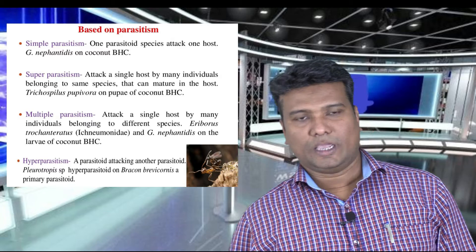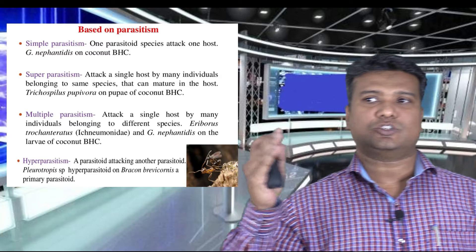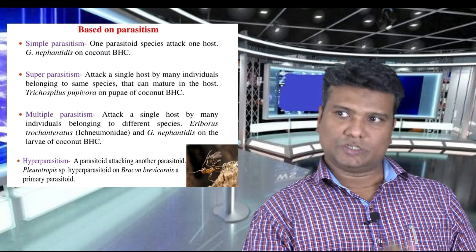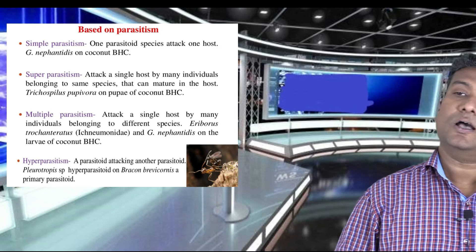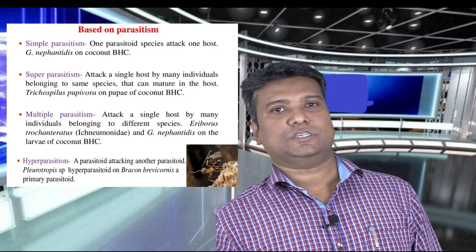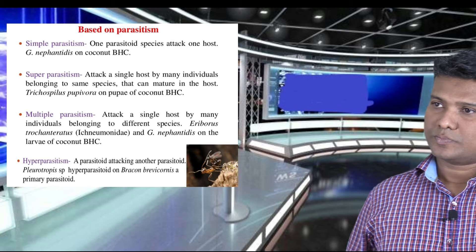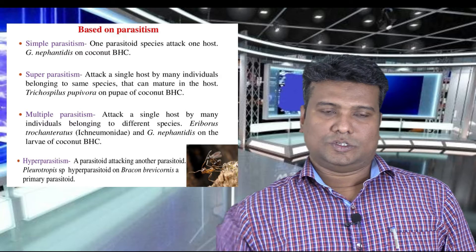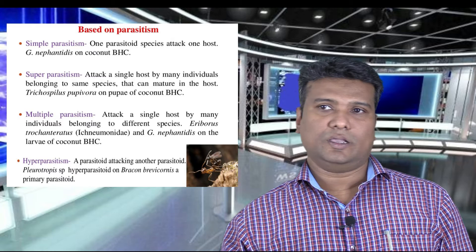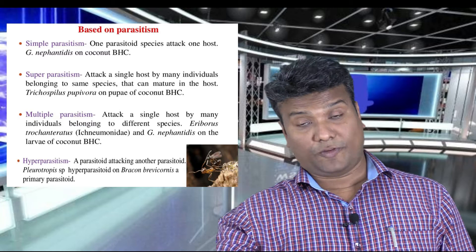The next category is multiple parasitism. In multiple parasitism, a single host is attacked by many individuals belonging to different species of parasitoids. The host is one individual, but multiple parasitoid species are affecting it. Multiple parasitism gives a potent effect in biocontrol because a single pest species is being affected by multiple parasitoids. The example is Eriborus, of the genus Eriborus under Ichneumonidae, which generally affects the larvae of coconut black-head caterpillar.